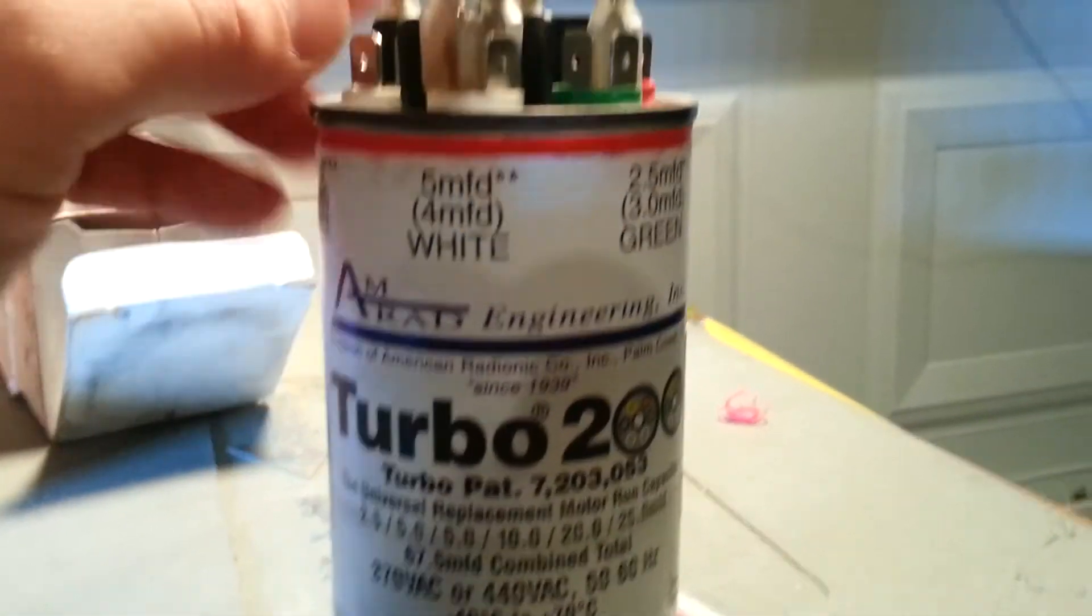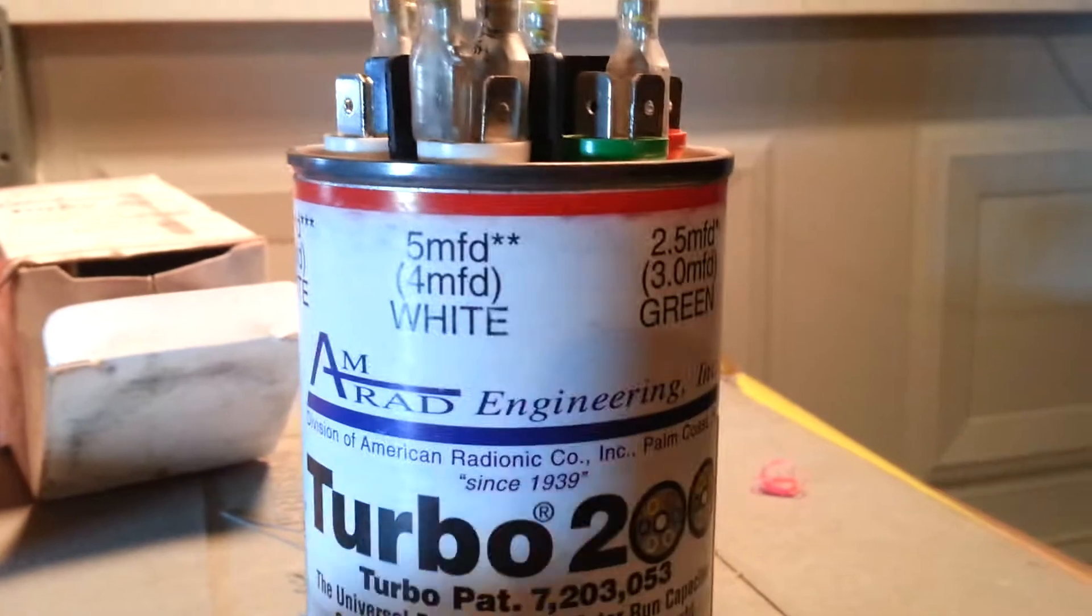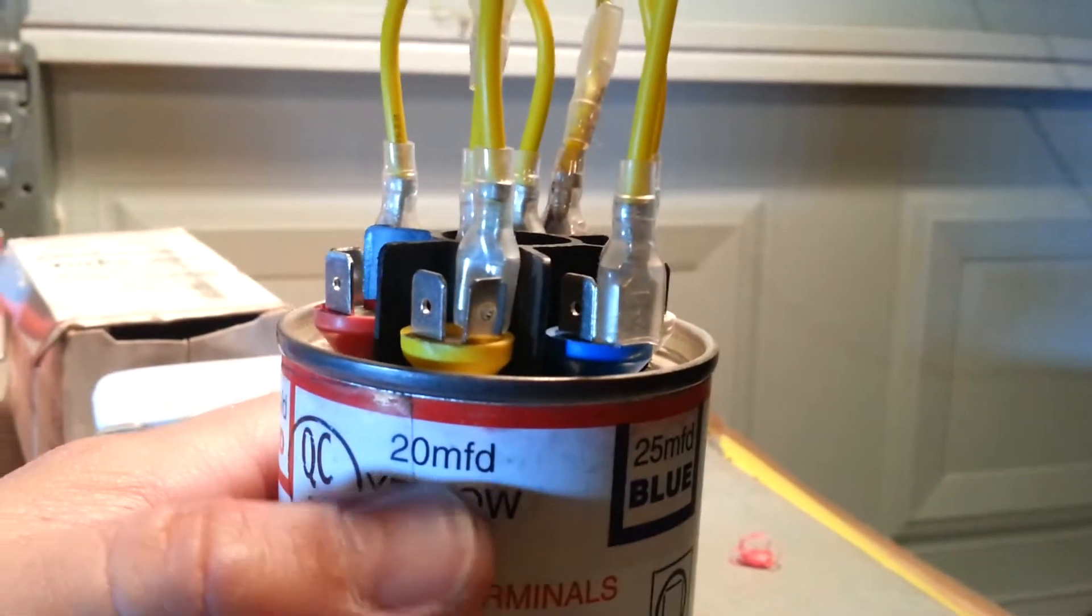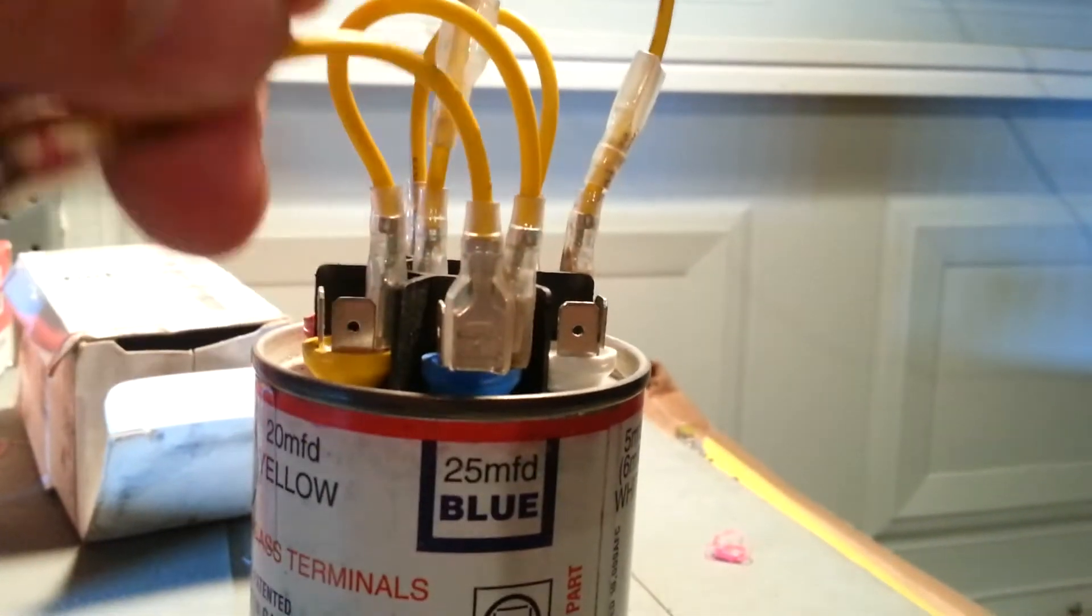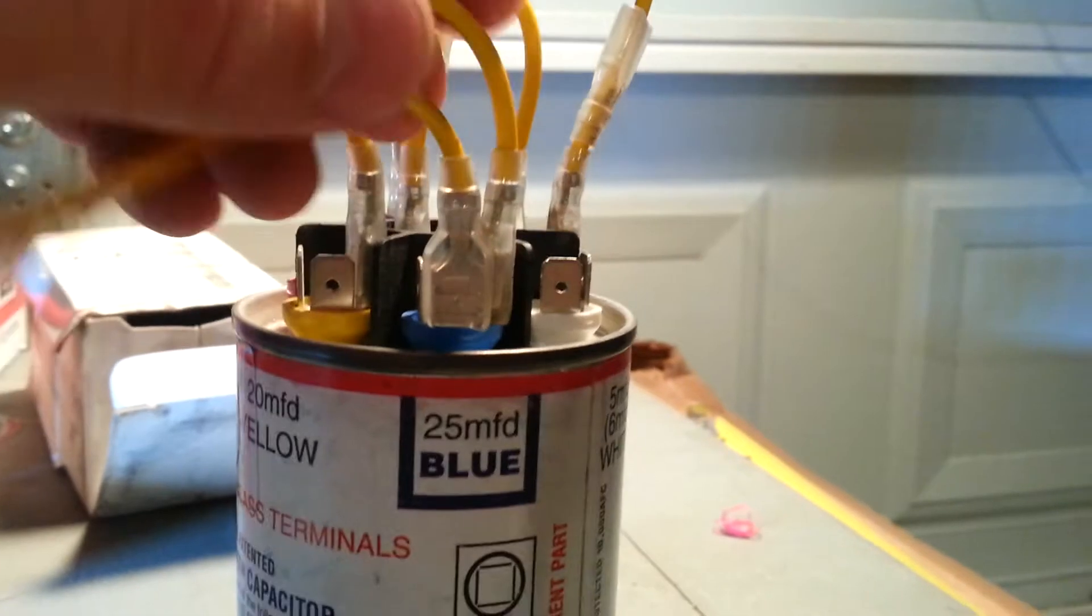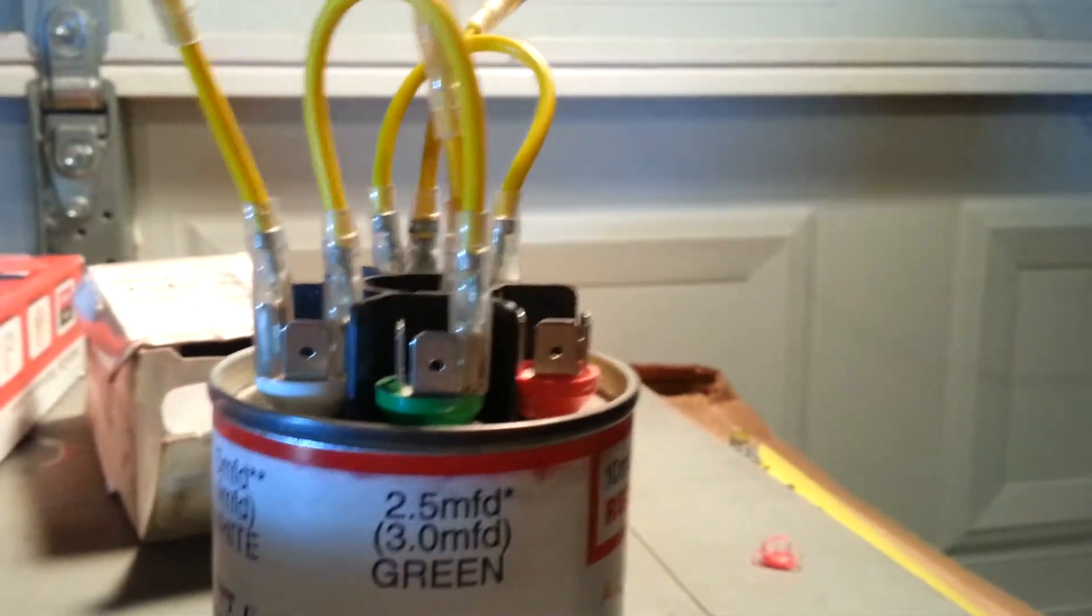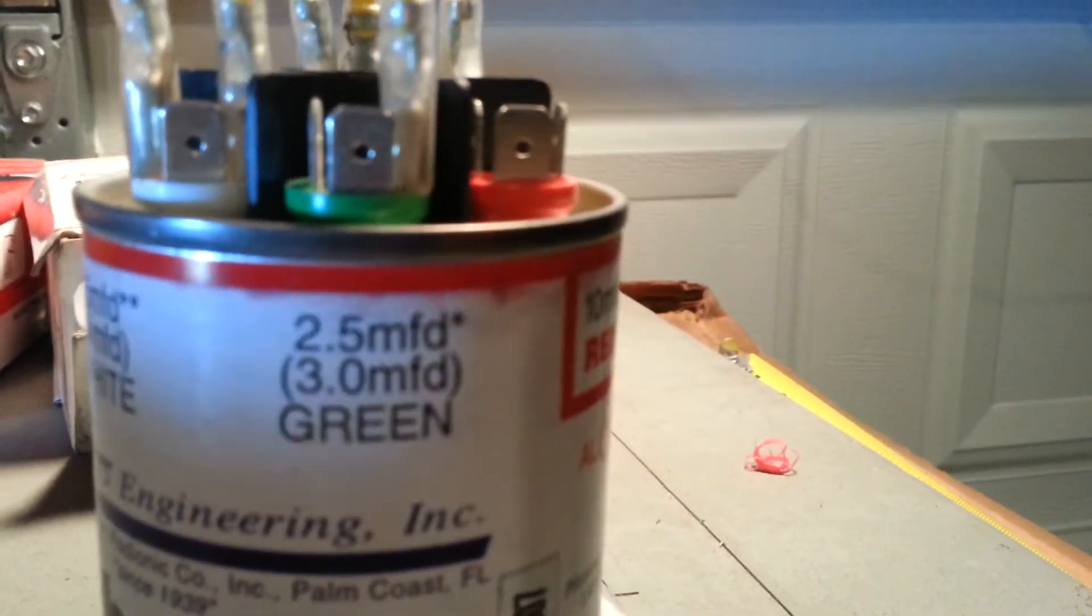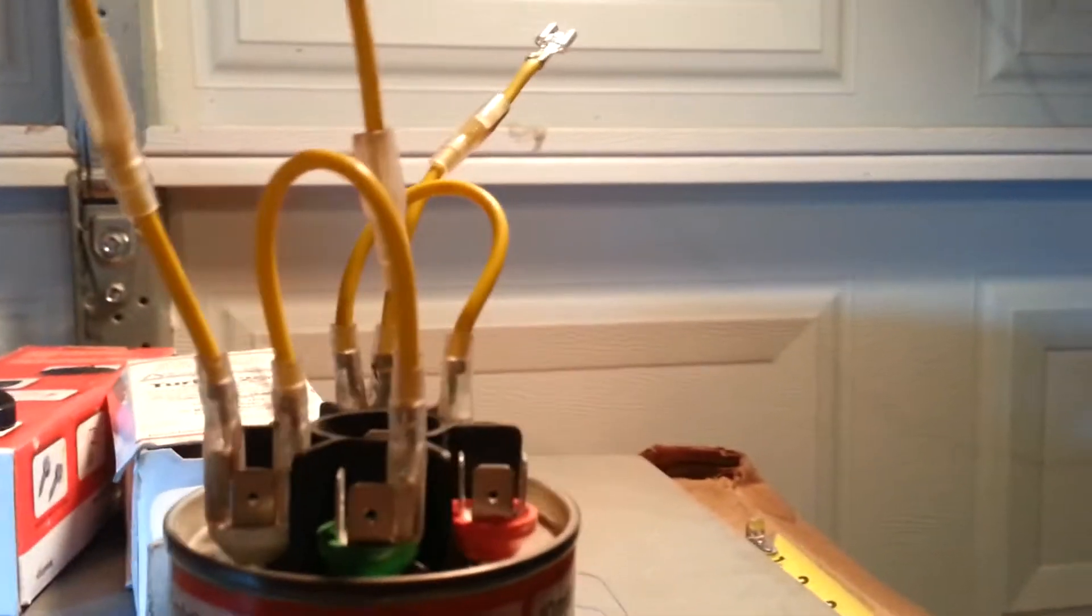So, on this one, I'm going to say I want to replace a 45 7.5. What I did here, I hooked the 20 to the 25 with a loop. And then this one's just going to be my lead to the compressor. And then over here, I found a 5 and a 2.5. I hooked those together for 7.5. And I've used them like this a lot. And they work pretty good.